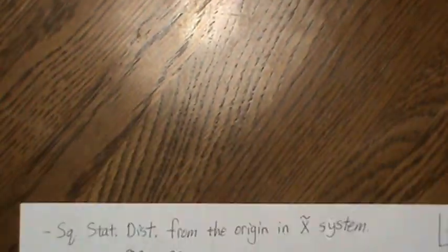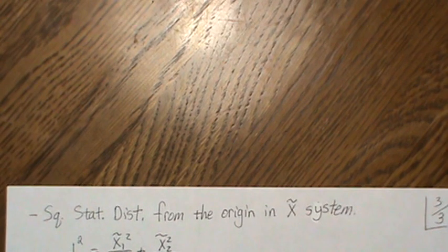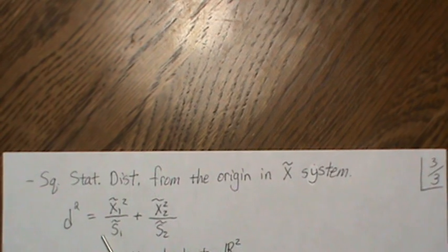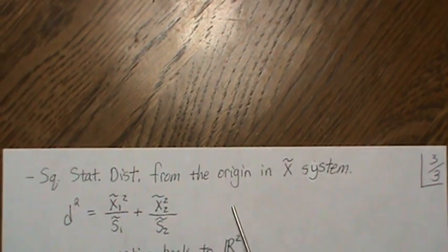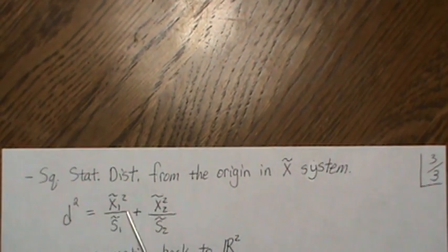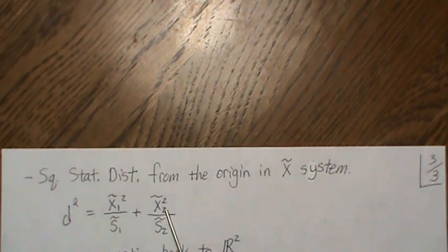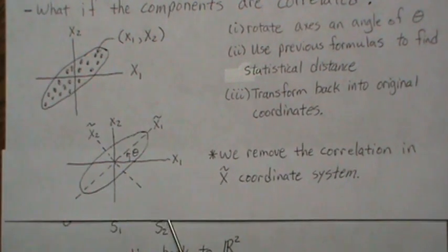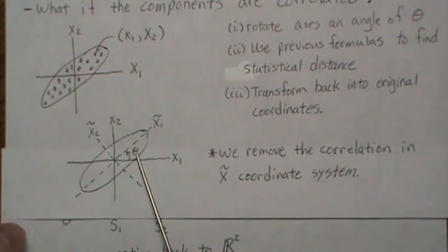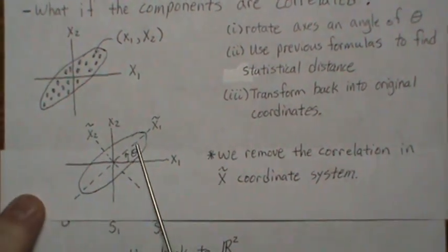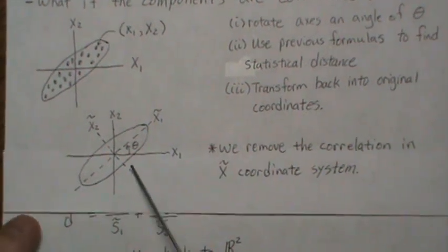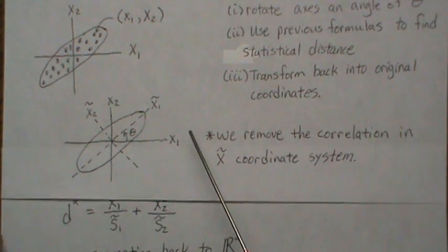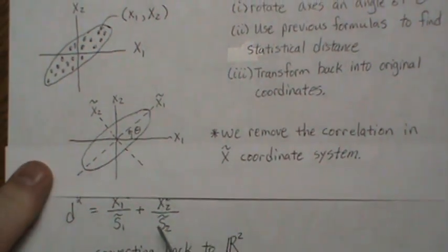So what it ends up looking like, so the squared statistical distance from the origin in our X tilde system is exactly what it was before, right? So we've transformed each of those variables. And now, and then you might say, well, what transformation? And I think that you can go to any calculus book and look at this transformation. It deals with cosine of this angle and the sine of this angle.